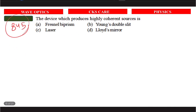The device which produces highly coherent sources — the options are Fresnel biprism, Lloyd's mirror, Young's double slit, and Lord's mirror. The answer is Lloyd's mirror, which produces highly coherent sources.